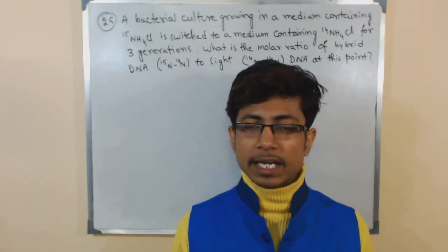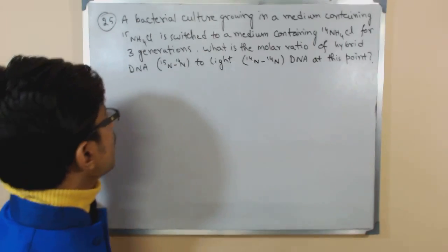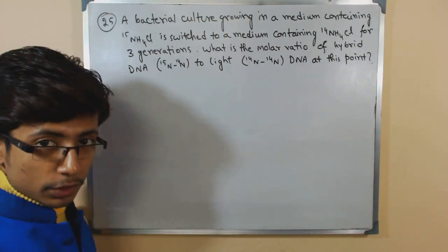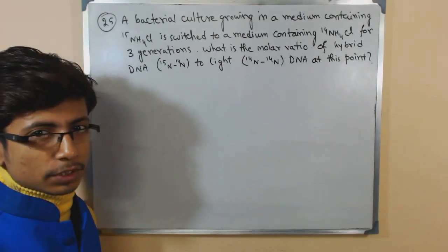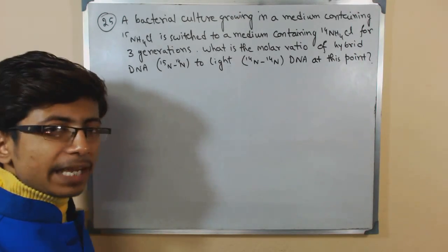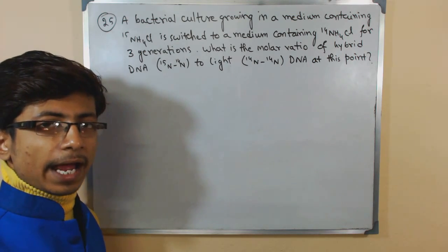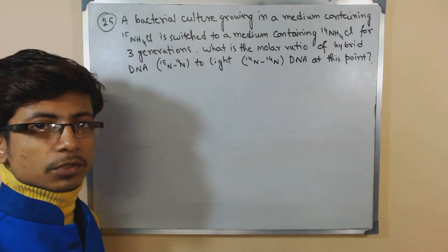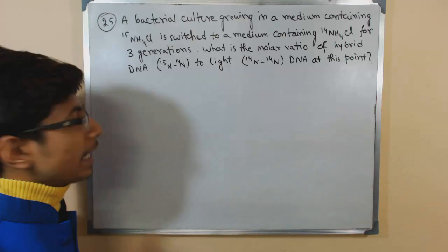Now this is another problem which is analytical and also from the DNA point of view. So let's look at it. Bacterial culture growing in a medium containing 15NH4Cl, which is heavy NH4Cl. N15 is the isotope of N14 which is the natural light isotope. N15 is slightly heavier than that.